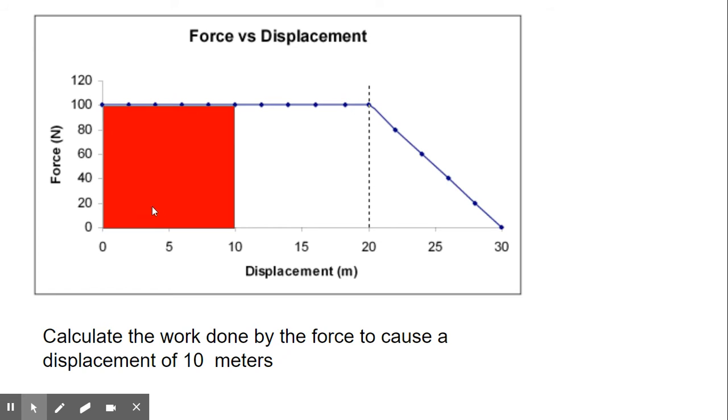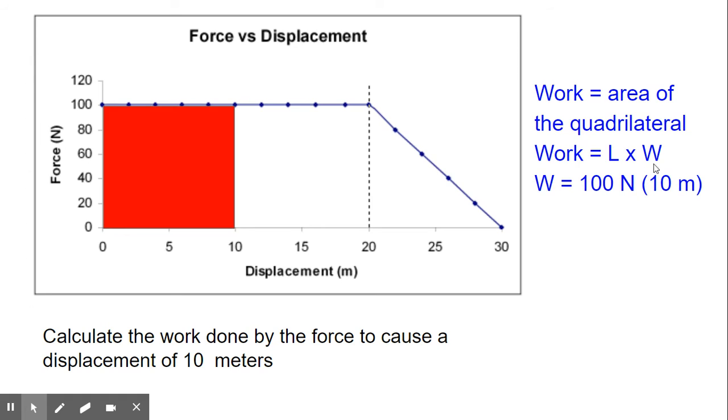If you look at this, it looks like a square, but because the scale is not the same, we're going to call this a quadrilateral. So to calculate the work, you have to calculate the area of the quadrilateral. In this case, work is equal to length times width, where the length is 100 and the width is 10. So the work done is equal to 1000 newton meters, or 1000 joules.